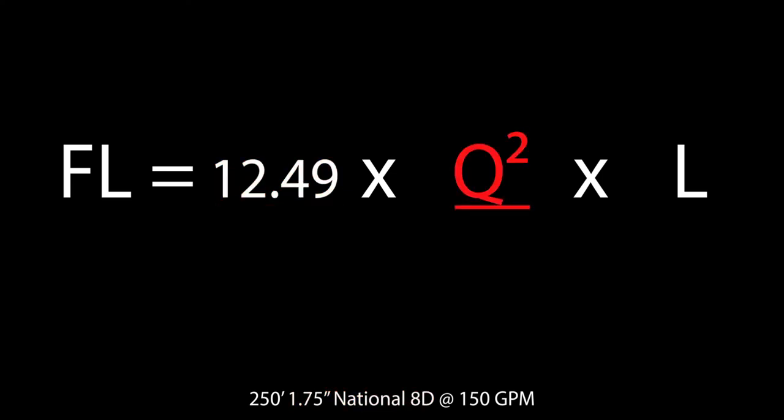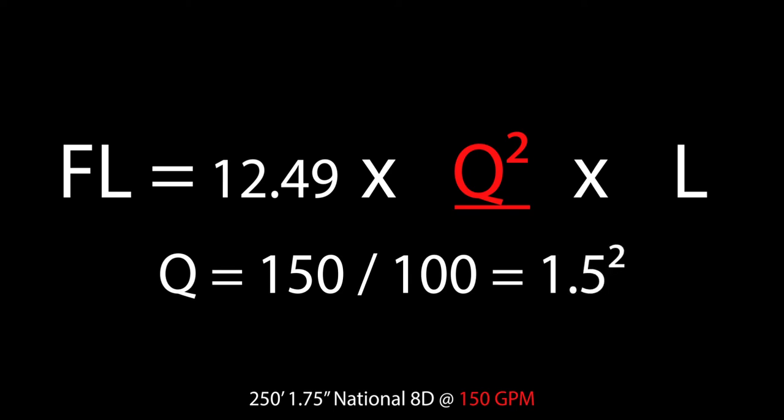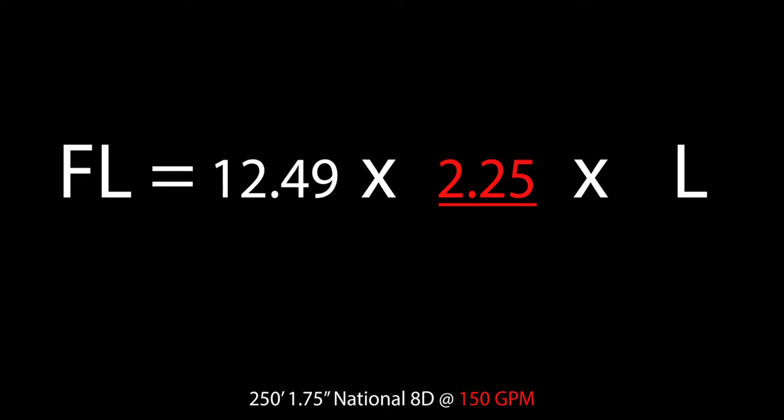Q squared is our target flow rate. For this example, 150 GPM divided by 100, then squared, equals 2.25.